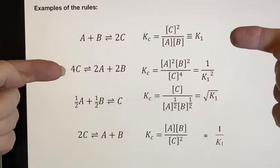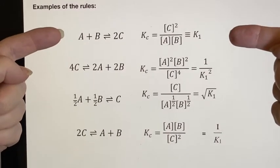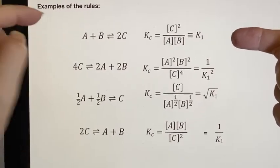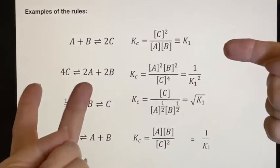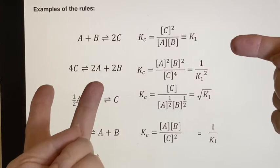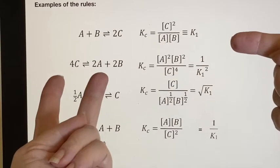This one, how does this relate to the equation? Well, it's changed which is reactant, which is product, but it has also had everything multiplied by two.